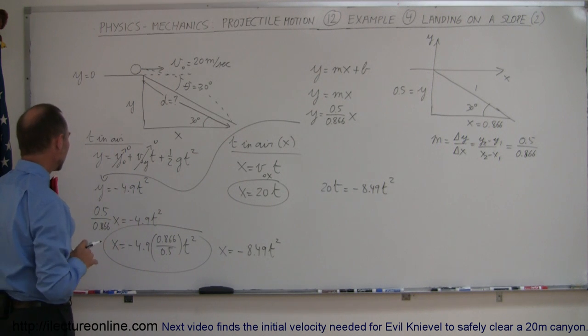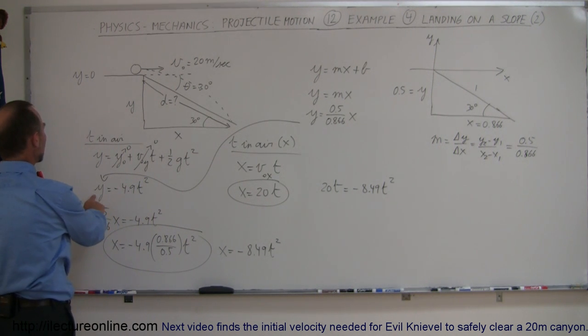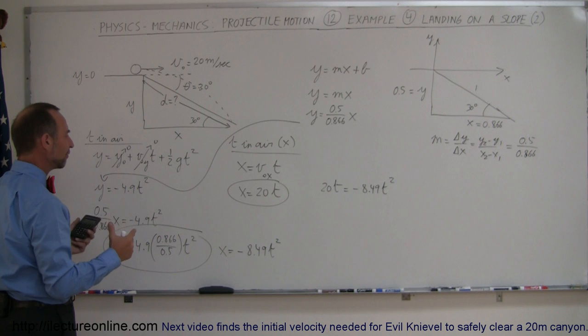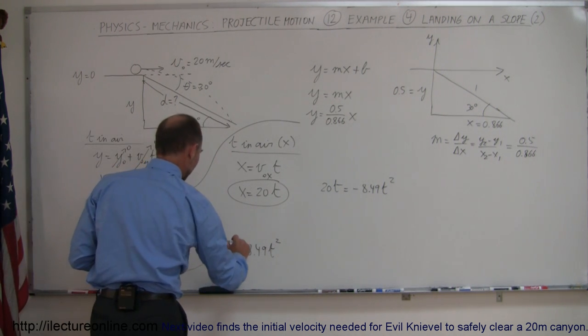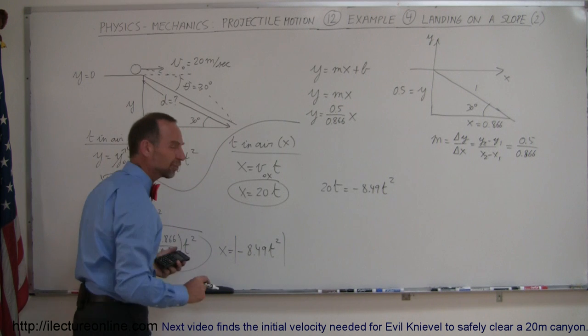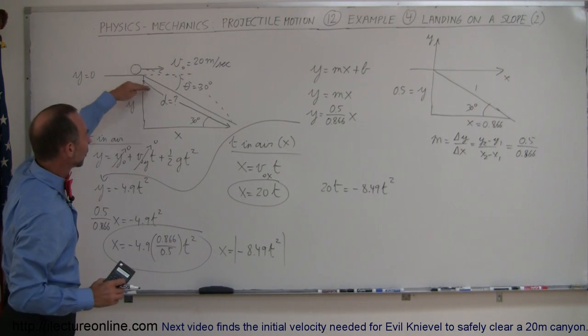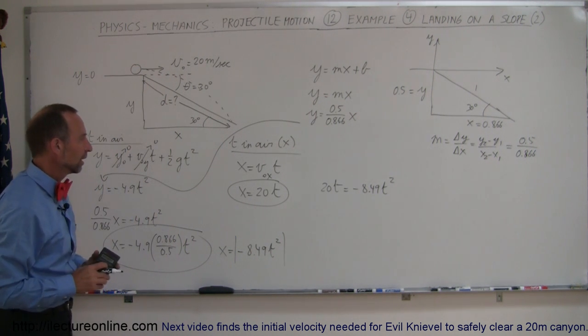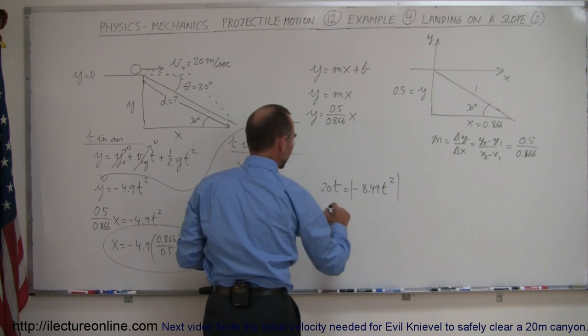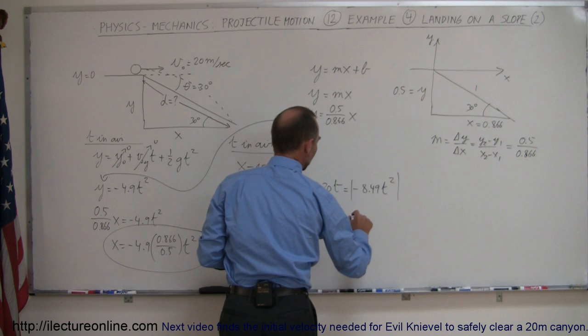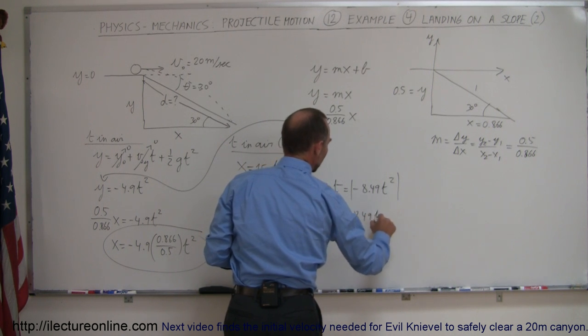Now one more thing here, y is going to be a negative quantity. I want to find the absolute value of that. So what I'm going to do is I'm going to say, let's make that an absolute value and negate the negative of going below the y equals 0 point. If I do that, I can find the absolute value of this right here, and set them equal to each other as 20t is equal to 8.49t squared.